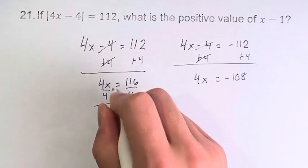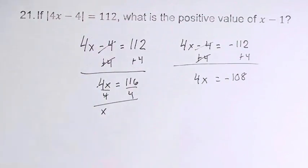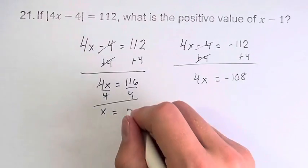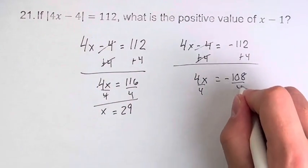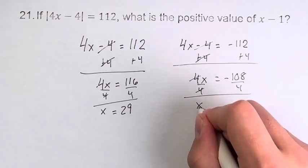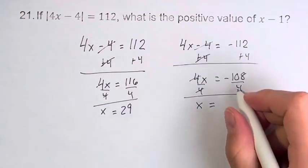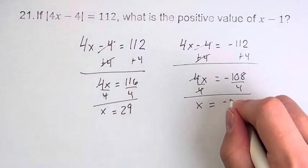Divide by 4 to get x on its own. The fours cancel. x is equal to 116 divided by 4, which is 29. Dividing by 4 on this side gives us x is equal to negative 108 divided by 4, which is negative 27.